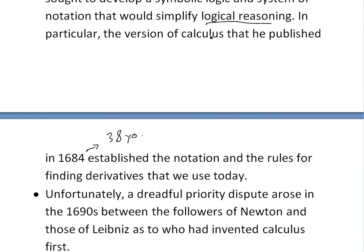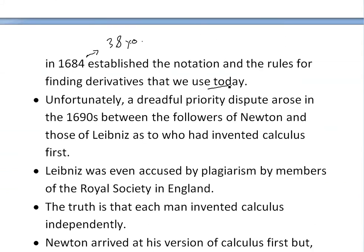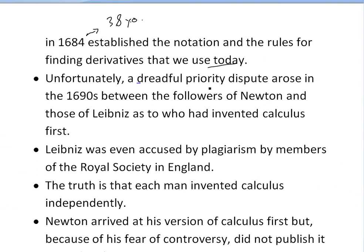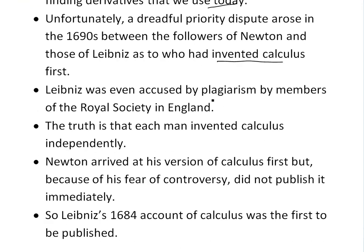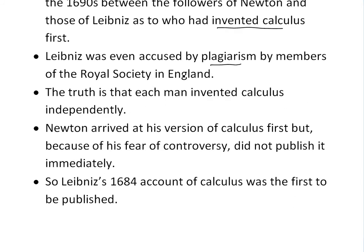So Leibniz published his version of calculus, and we still use that notation and his rules for finding derivatives all the way to today, 2013. Unfortunately, a priority dispute arose in the 1690s — when he was in his mid-forties — between the followers of Newton and Leibniz as to who had invented calculus first. Leibniz was even accused of plagiarism by members of the Royal Society in England. But the truth is that each man invented calculus independently. Newton arrived at his version first, but due to fear of controversy did not publish it immediately — because what Newton was proposing was different from all the accepted mathematics and science of the time, and it's a big deal to go against the norm. So Leibniz's 1684 account was first to be published, and his notation is more widely used today.